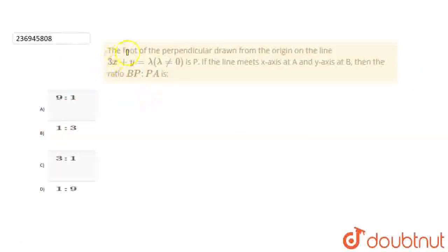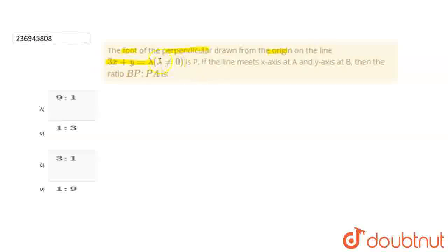Hello friends, our question is: the foot of the perpendicular drawn from the origin on the line 3x + y = λ (λ ≠ 0) is P. If the line meets the x-axis at A and the y-axis at B, then the ratio BP : PA is?